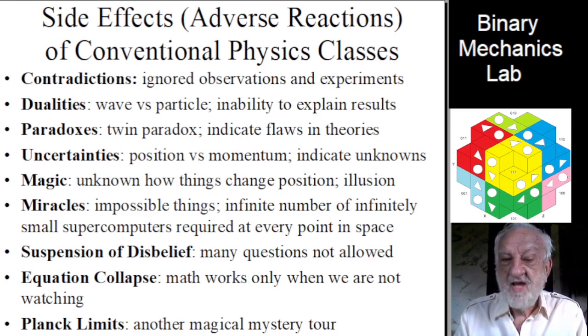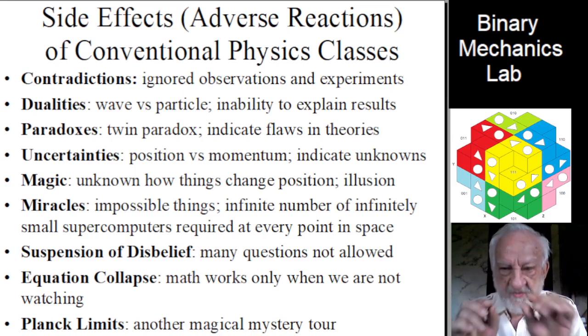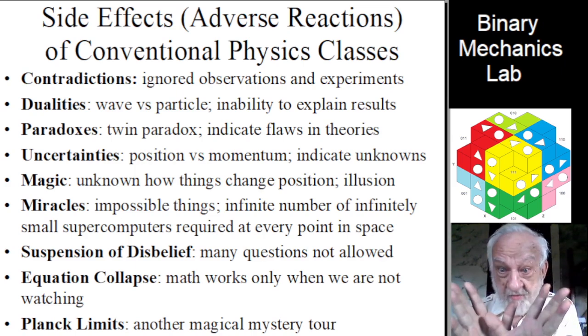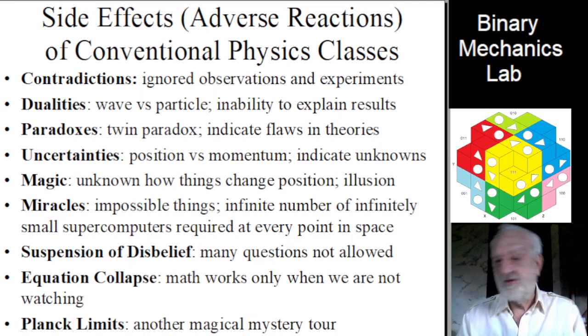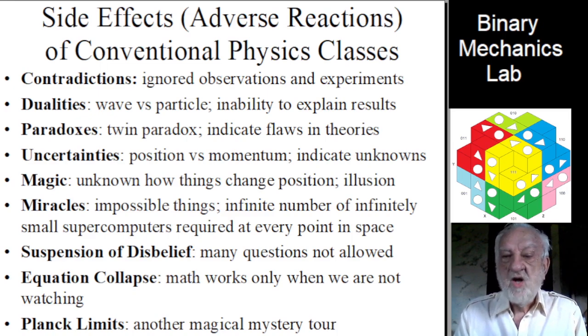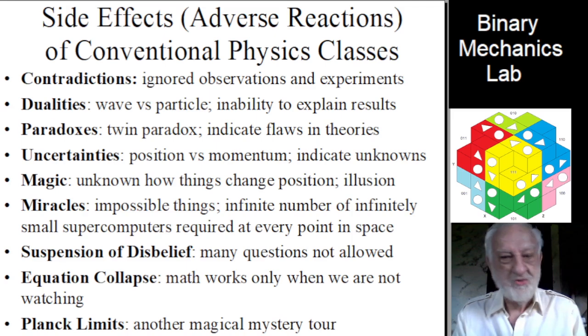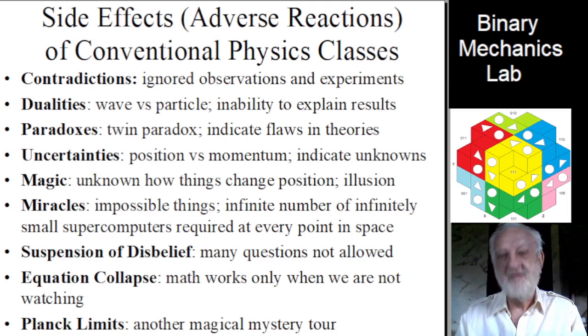Then we have miracles or impossible things, such as an infinite number of infinitely small sensors and supercomputers at every point in space required to determine the value of various fields postulated by theoretical physicists. Another miracle are the infinite number of infinitely small inertial motion guidance devices required by general relativity.